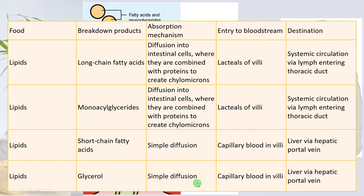In the case of glycerol, it also moves by simple diffusion, enters the bloodstream via capillary blood in the villi, and the destination is the liver via the hepatic portal vein. From there, these molecules are distributed to different parts of the body.